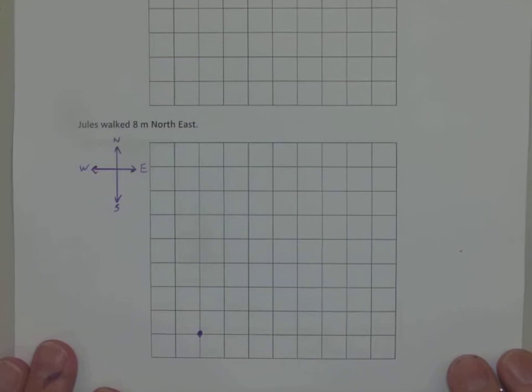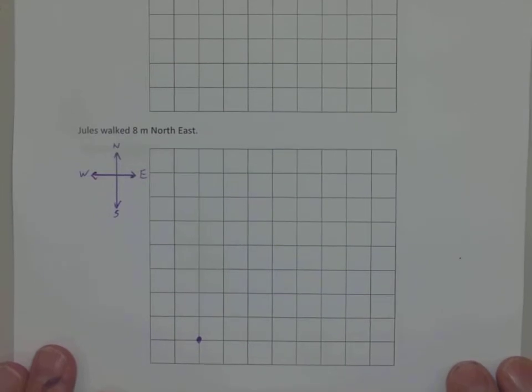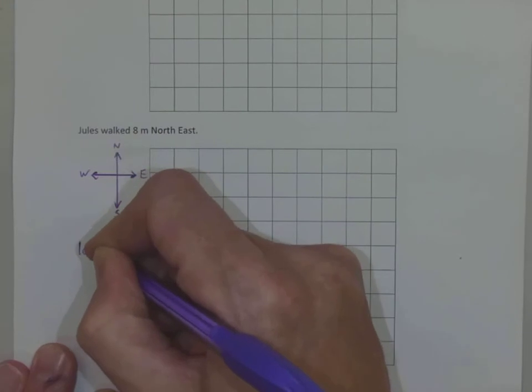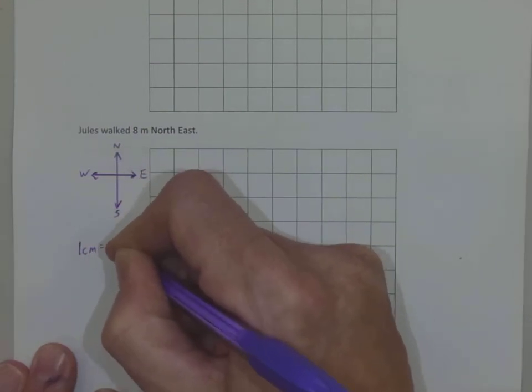Now we need a scale. So we've got an orientation, now we need a scale. He's going eight meters northeast. Looking at the grid and the space that I've got available to me, I'm probably best to go with one centimeter equals one meter again. So I write in my scale, one centimeter equals one meter.